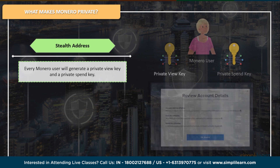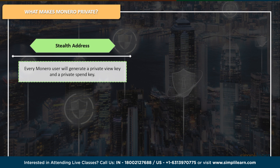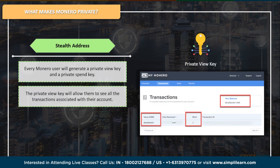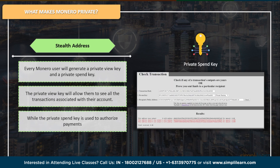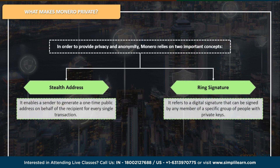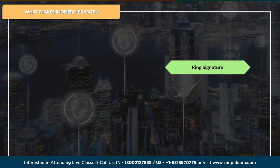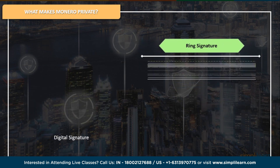Just like in Bitcoin, Monero users will generate both a private view key and a private spend key. The private view key enables them to view all the transactions linked to the account, while the private spend key functions similarly to a Bitcoin private key as it authorizes payments.